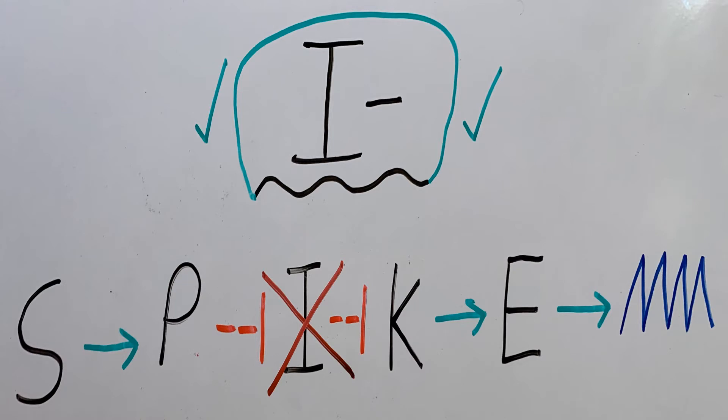For our third strain in which I is mutated and not functioning, we will go through the pathway to see if this checks out. So S promotes P, which goes to inhibit I. However, I is mutated, so it can't go on to inhibit K. And if K isn't inhibited, then K will promote E, which goes on to promote the formation of spikes. So the I mutation does work to form spikes.